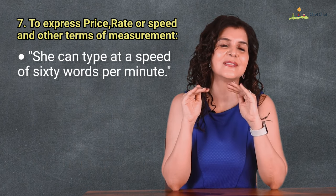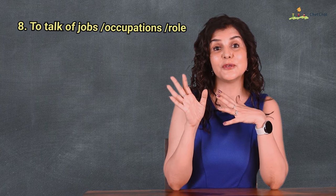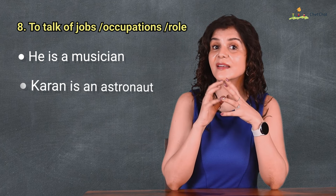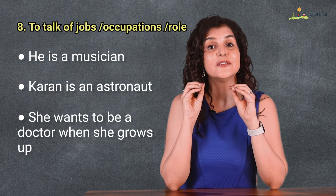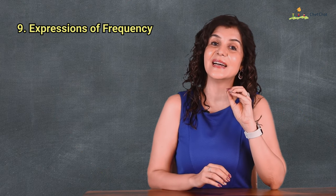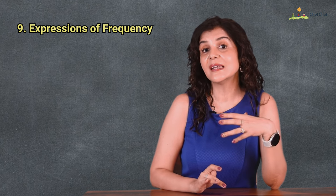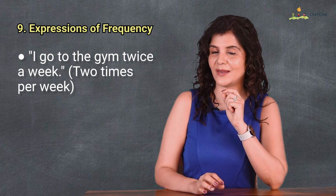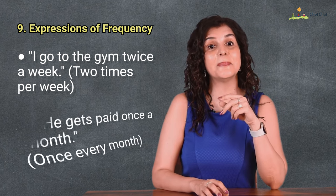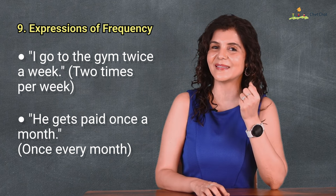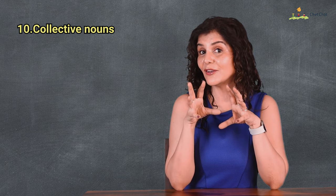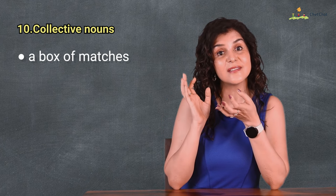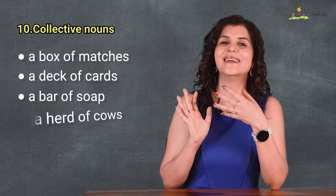She can type at a speed of 60 words per minute. A and an can also be used to talk about jobs, occupations, and roles: he is a musician; Karan is an astronaut; she wants to be a doctor when she grows up. We also use a and an with expressions of frequency to indicate how often something happens: I go to the gym twice a week — two times per week; he gets paid once a month — once every month.